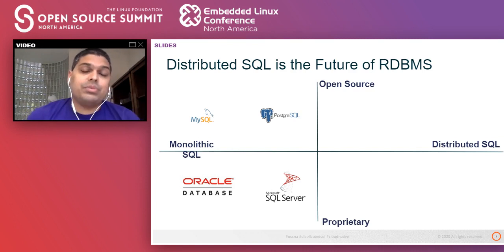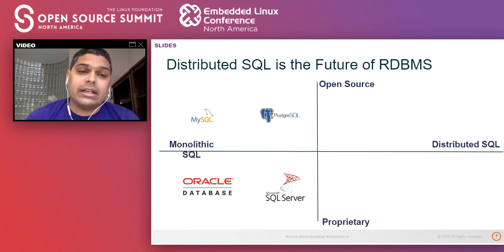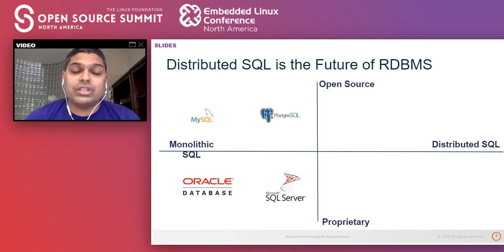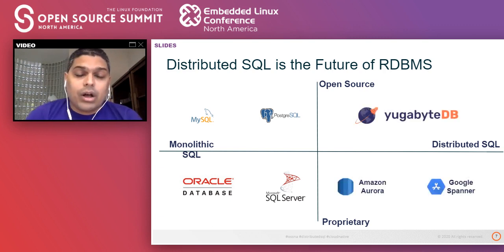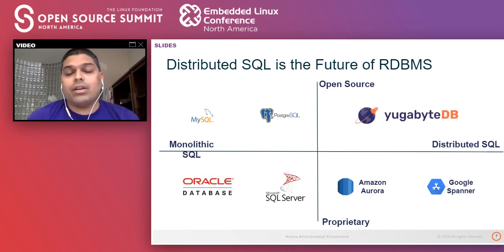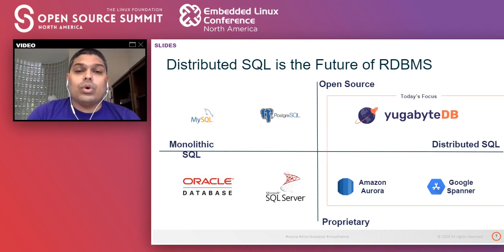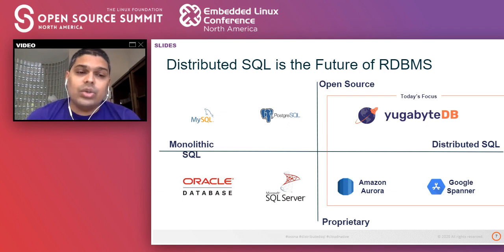We are excited that distributed SQL is actually the future of the relational database architecture, which is so critical to modern generation applications. Previously, we would have relied on traditional RDBMSs like MySQL, Postgres, Oracle, or SQL Server. However, now the world is moving towards the likes of Amazon Aurora, Google Spanner, and obviously YugabyteDB. Today's focus for the remaining part of this talk is in this newer, exciting category of relational databases called distributed SQL.